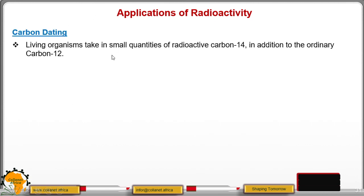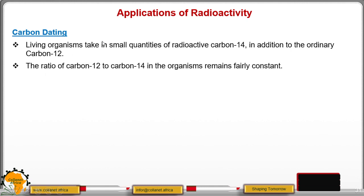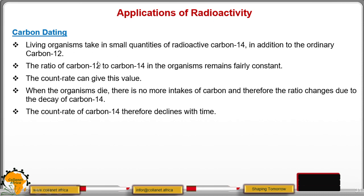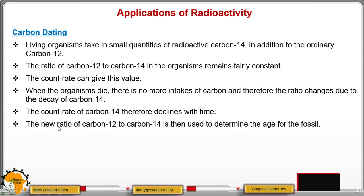Then we have carbon dating. When we have carbon-14, it can be used to give us the age of fossils. Living organisms take in small quantities of radioactive carbon-14 in addition to ordinary carbon-12. While alive, the ratio of carbon-12 to carbon-14 remains fairly constant. But when the organism dies, the intake of carbon stops, so the ratio changes as carbon-14 decays. The new ratio of carbon-12 to carbon-14 can be used to determine the age of a fossil.